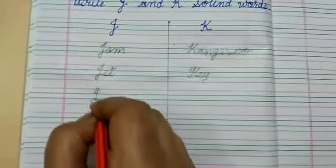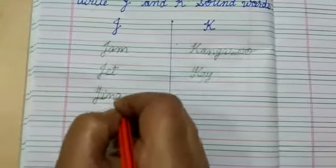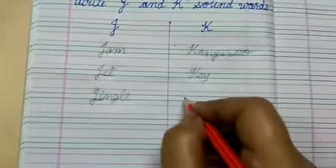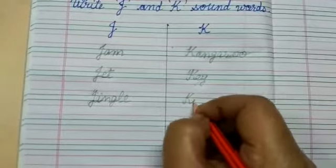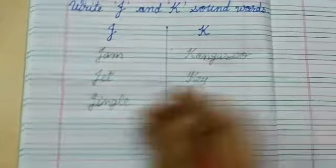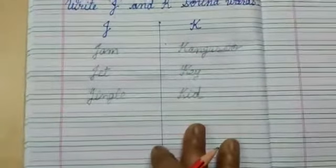और J I से J I N G L E Jingle और K I D Kid और 2 अपलोग लिखना है. Okay. Bye.